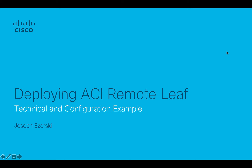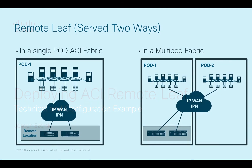Hi, in this series of videos I want to talk about a new feature in ACI called remote physical leaf. There are two ways you can go about deploying this. The first example on the left is if you have a simple single pod ACI fabric and you want to extend some remote physical leaves to a remote location, but those leaves are part of the same single pod 1.